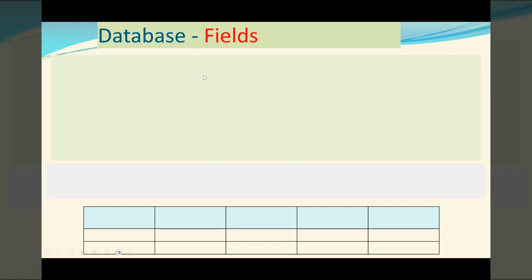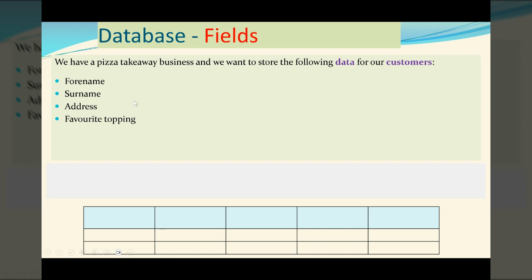First we've got fields. So let's use an example of a pizza takeaway business. And we want to store the following data for our customers: their forenames, their surnames, their favorite topping, and the number of pizzas they've ordered. Now the information that we want to store, these separate pieces of information, they become our fields.